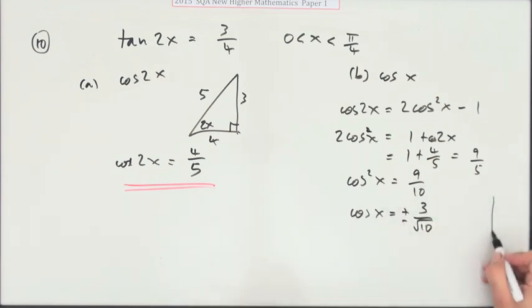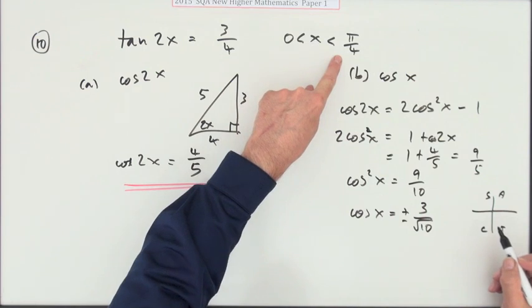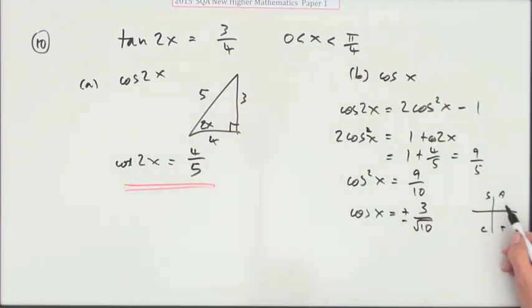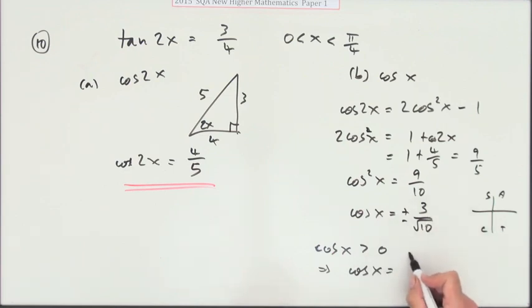Now it could be plus or minus that. But you know from all-sine-tan-cos that if you're in the first quadrant, everything's positive. So since cos x is greater than 0, cos x must be the positive part of it. I think you probably have to make the statement. So that's 3 upon √10.